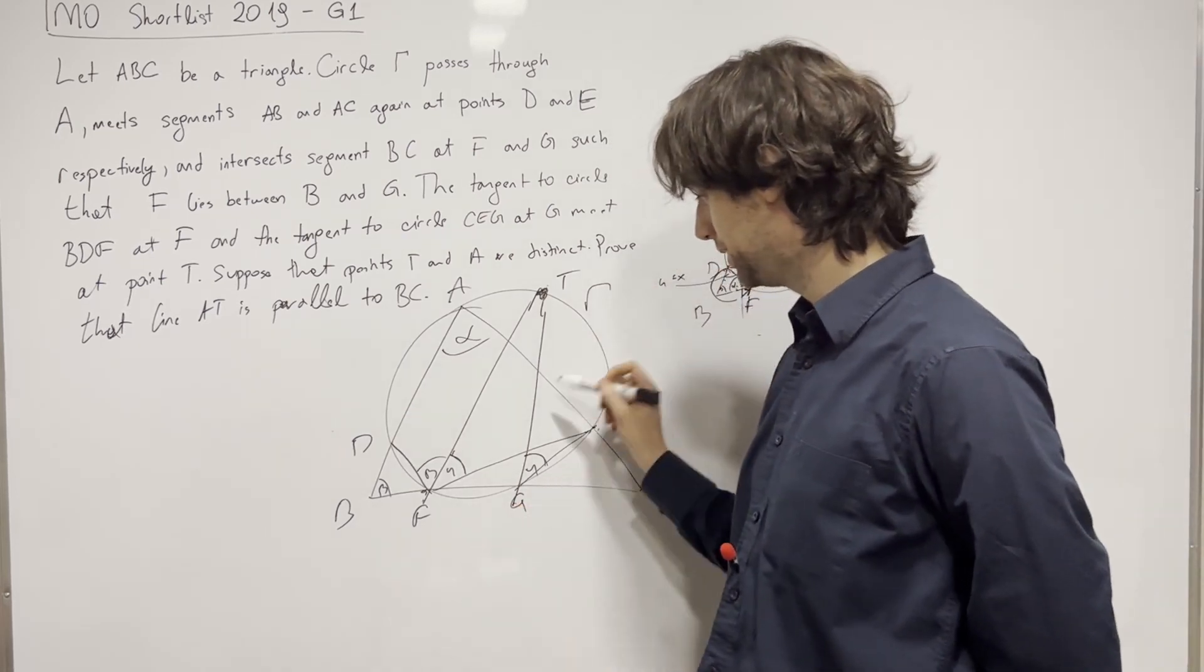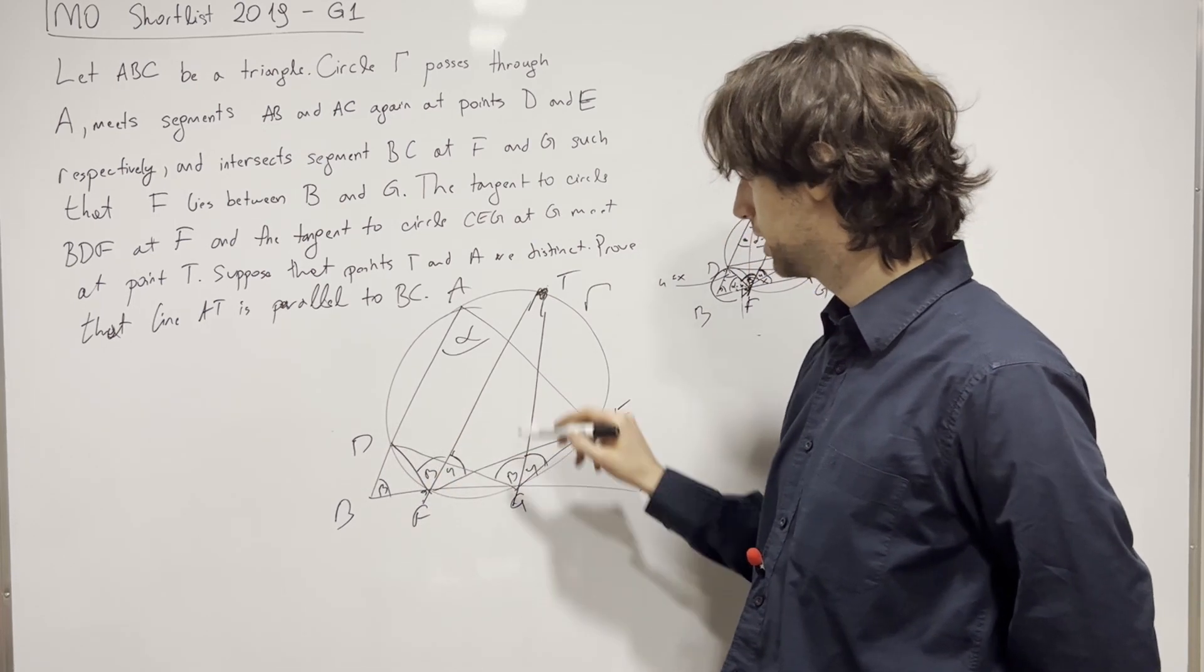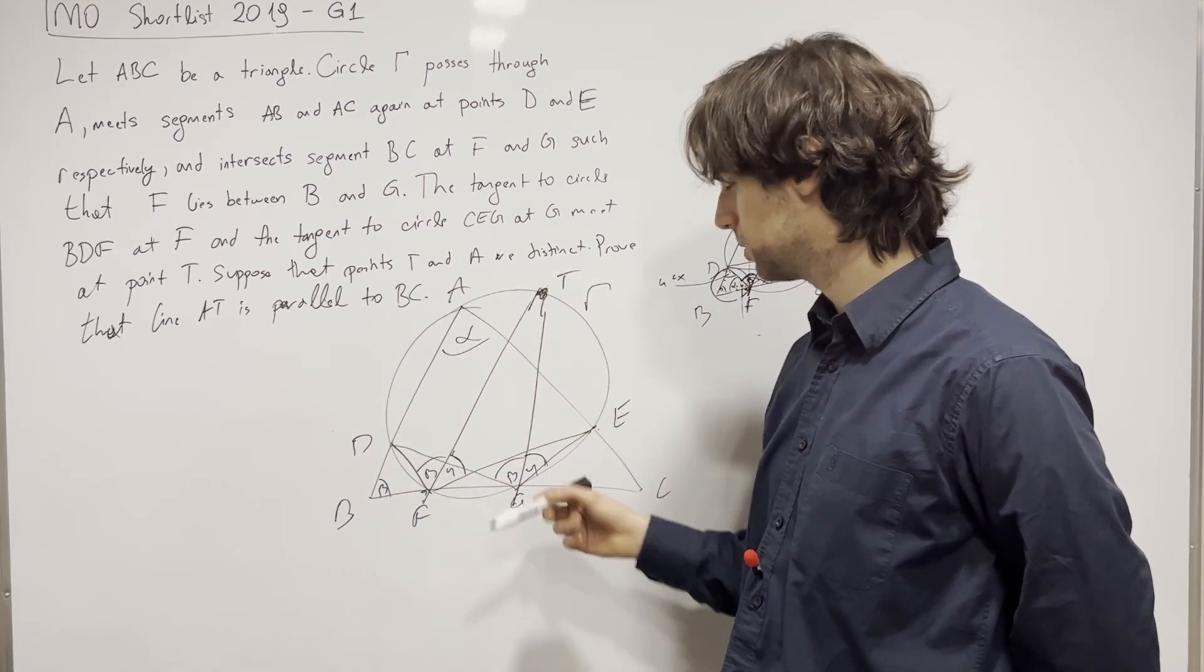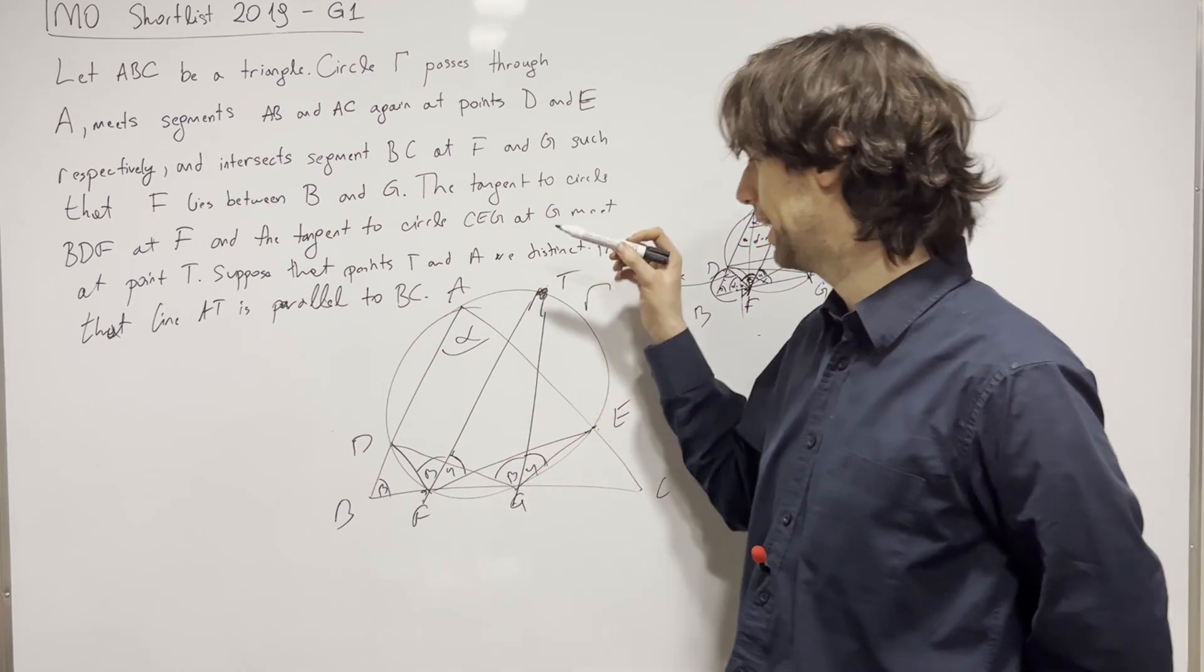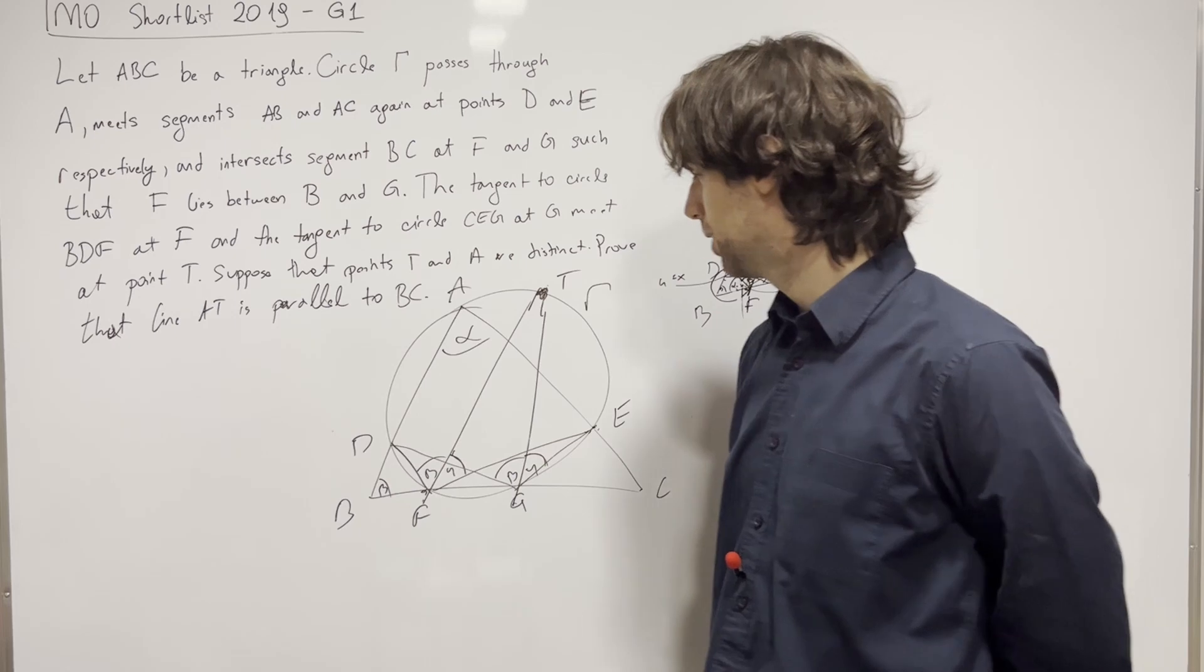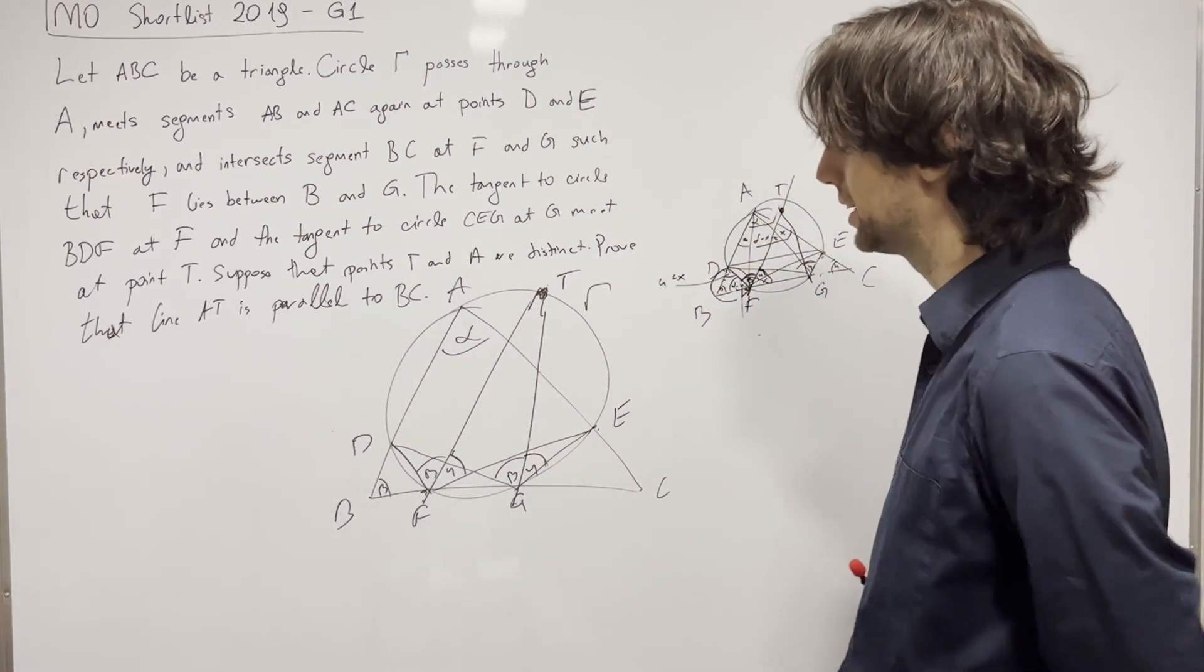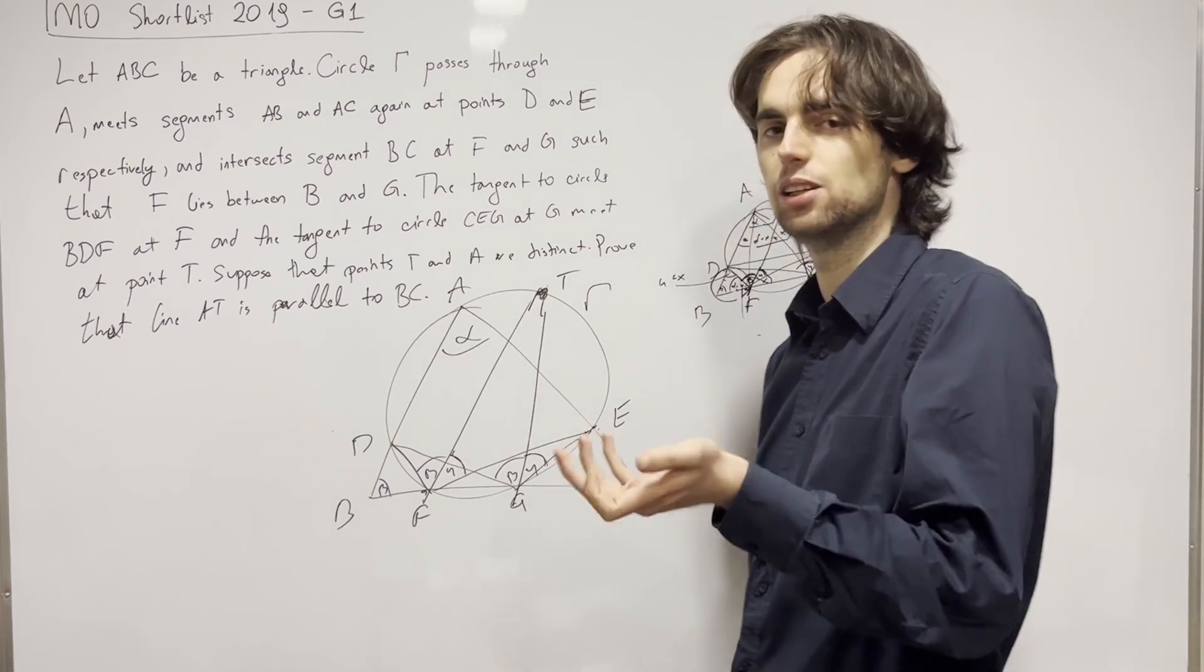Right. So we have T's on this circle. Because we would also have, mind you, this angle here would be beta. And we need to prove that AT is parallel to BC or that AT is parallel to FG. Or in other words, what do we need to prove? I invite you to pause for two to three minutes and figure out what is it that we really need to prove.